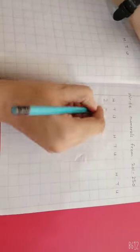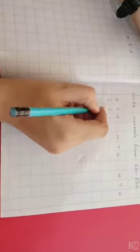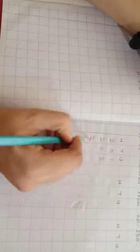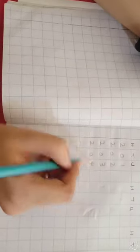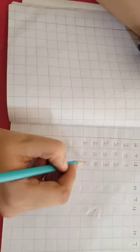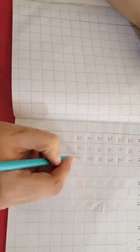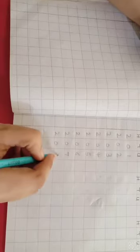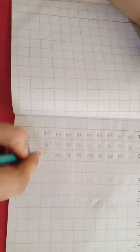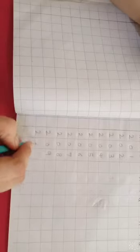We write 201, 2 under the 100, 0 under the 10, 1 under the unit. Then 202, 203, 204, 205, 206, 207, 208, 209 and 210.